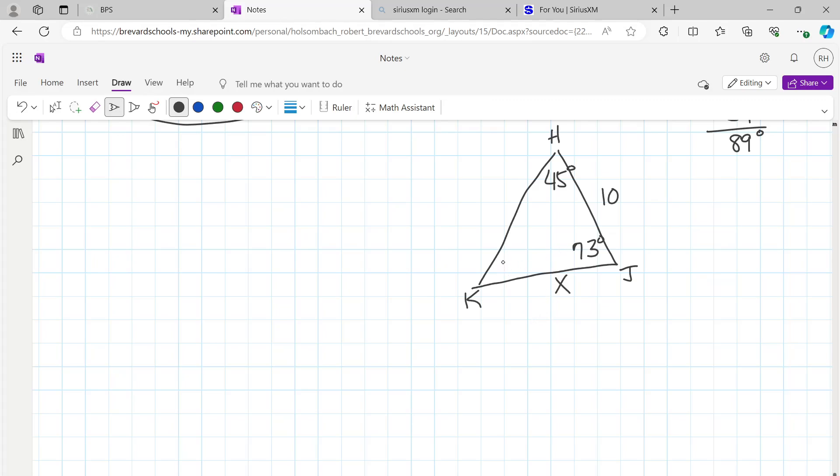So let's find the measure of angle K, because it's opposite the side that's 10. So angle K is going to be equal to 180 minus 73 minus 45, which is 62 degrees. So now we can write the proportion, sine 45 over x equals sine 62 over the 10.